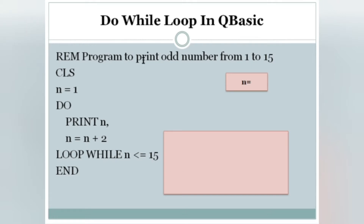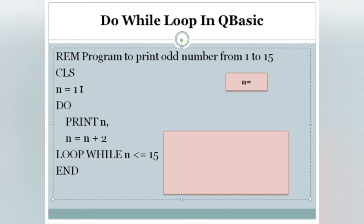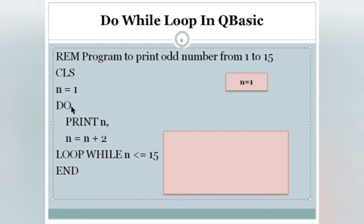The program is to print odd numbers from 1 to 15 — that means we have to print only odd numbers, not even. The first odd number is 1, second is 3, then 5, 7, 9, and so on. CLS is used to clear the output screen, and REM is used to write a comment. N equals 1 because we have to start with 1. DO marks the starting of the do-while loop — here we are not checking any condition, it starts directly.